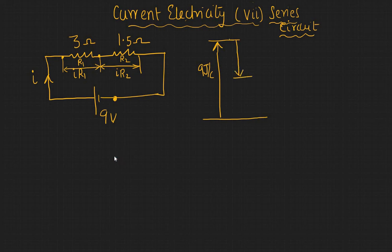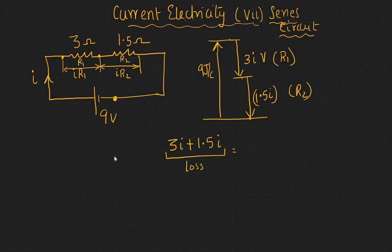And here it would be i into R2, so that would translate into a drop of here i into 3. So this is a 3i volts drop which is basically across the R1, and you have about 1.5i drop which is across R2. You can equate them.